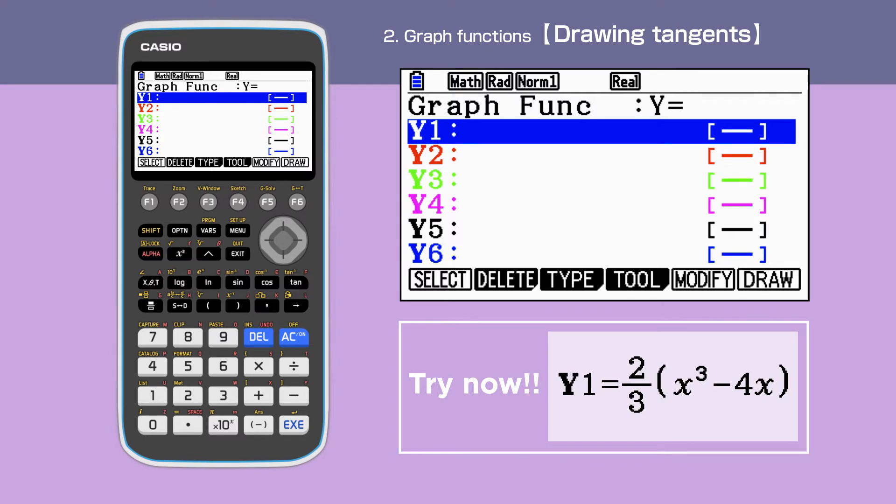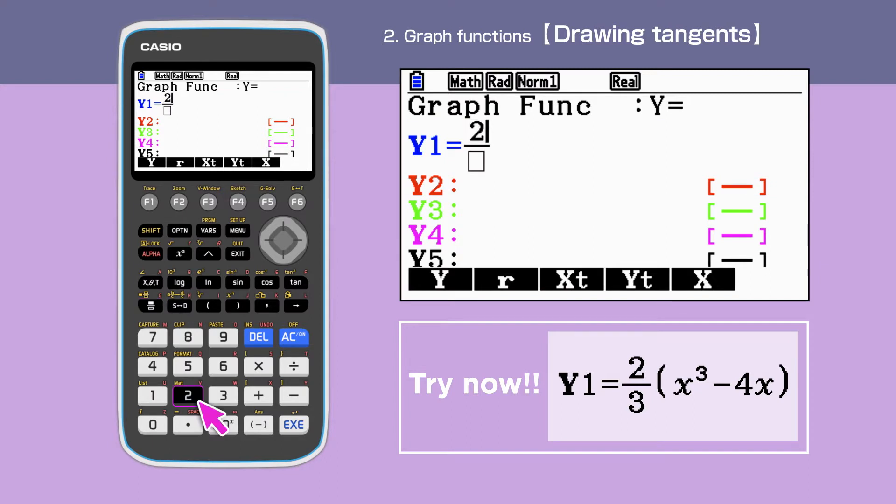First, we will draw a tangent to a graph. Check that the Graph Function shows y equals, then enter the equation y equals 2 over 3 bracket x cubed minus 4x in y1.